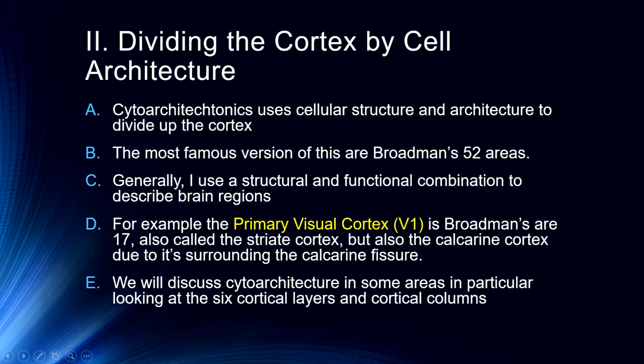Generally, as I said at the beginning, I use structural and functional combinations to describe brain regions. As we introduce the primary visual cortex, what we call V1, is Broadman's area 17. It's also called the striate cortex, also called the calcarine cortex. Welcome to neuroscience. Everybody has to call something a little bit different. I will use the primary visual cortex or V1 generally in that description. We will discuss cytoarchitectonics in some areas, particularly we will look at cortical layers and cortical columns, which will become very important when we're talking about vision. But overall, as we're navigating the brain, we'll be talking mostly on a functional, structural-functional combination.